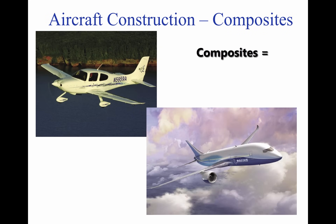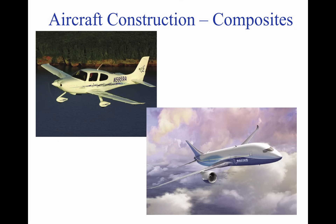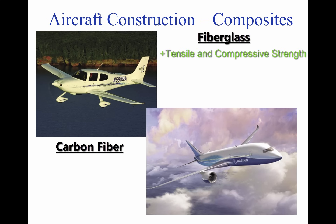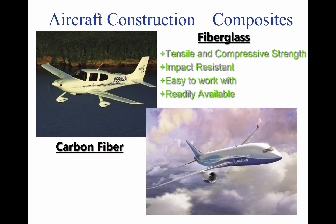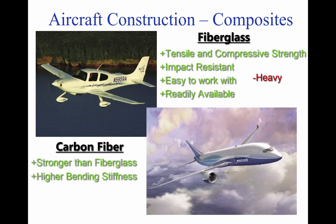Composite materials are fine fibers arranged in a matrix system held together by glue such as epoxy and polyester resin. The fibers are most commonly made from carbon fiber or fiberglass. Fiberglass has good tensile and compressive strength, good impact resistance, is easy to work with, and is relatively inexpensive and readily available. Its main disadvantage is that it is relatively heavy and difficult to make lighter than a well-designed equivalent aluminum structure. Carbon fiber is generally stronger in tensile and compressive strength than fiberglass, has much higher bending stiffness, and is considerably lighter. However, it is relatively poor in impact resistance, as the fibers are brittle and tend to shatter under sharp impact.